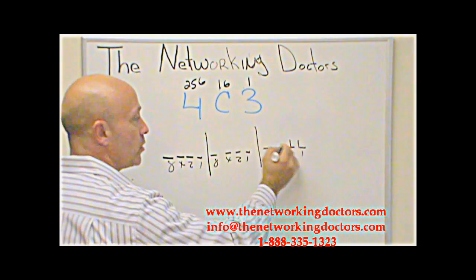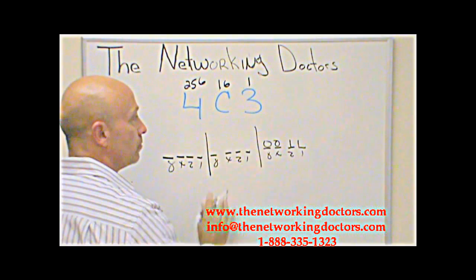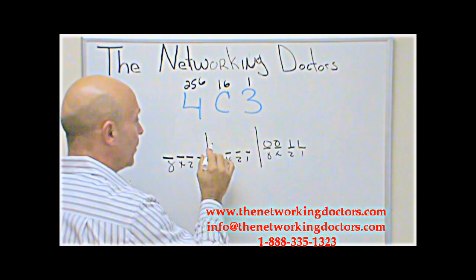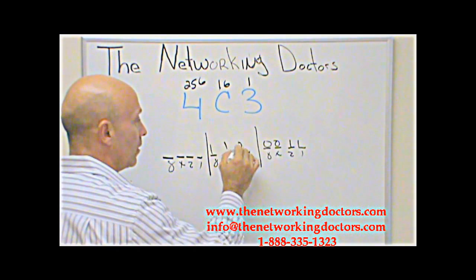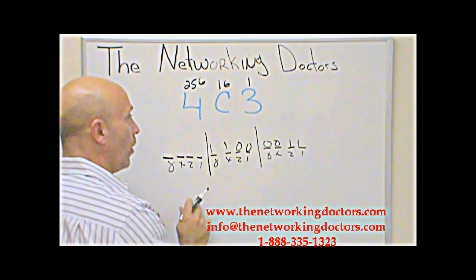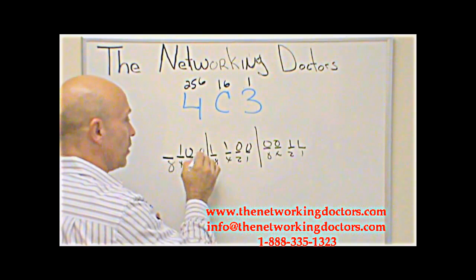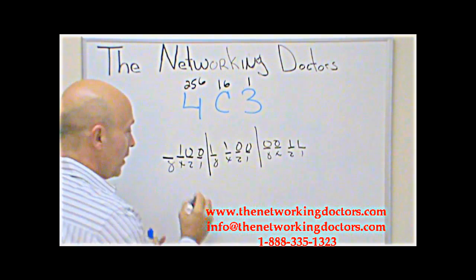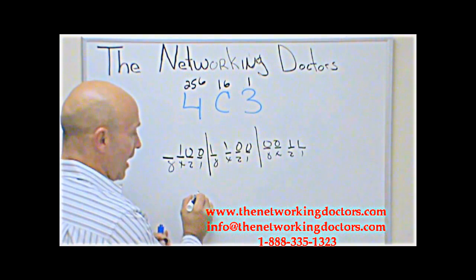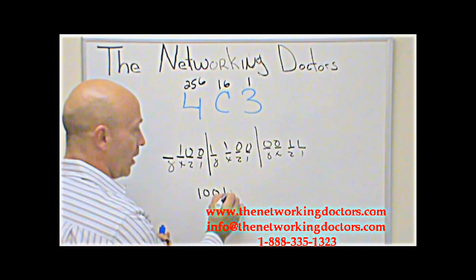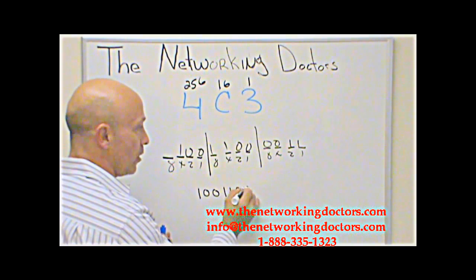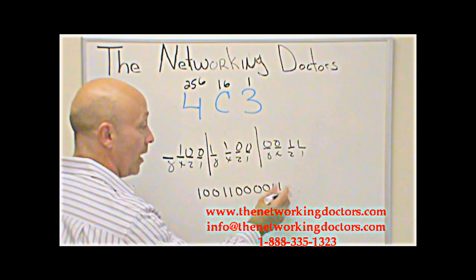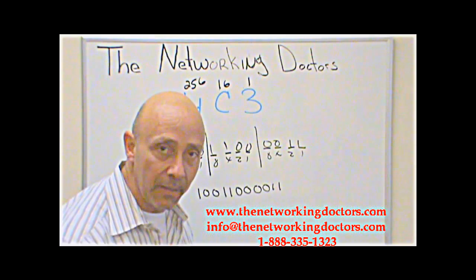For the digit 3: it's 1 and 2. For C which equals 12: it's 8 and 4. For the 4: just 4, then 0, 0. So that means you have the binary: 1, 0, 0, 1, 1, 0, 0, 0, 0, 1, 1. Hey, look — we also got the binary representation. How about that?